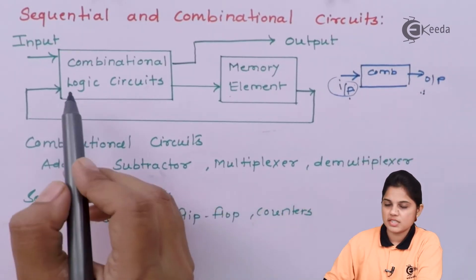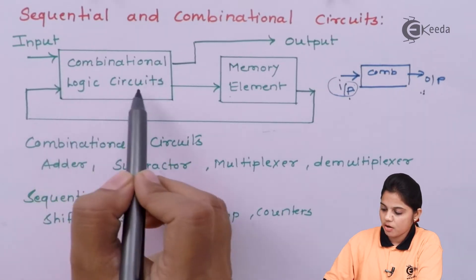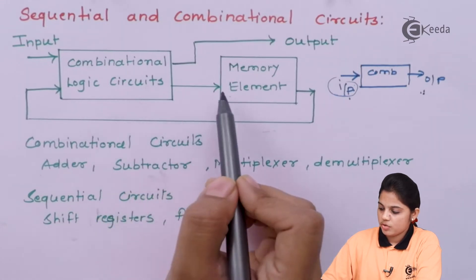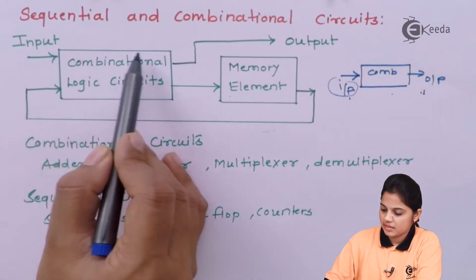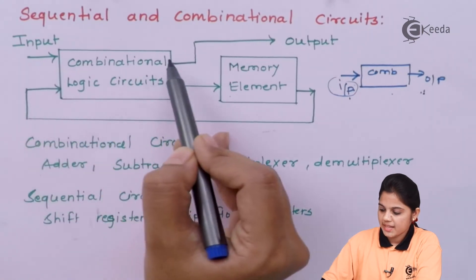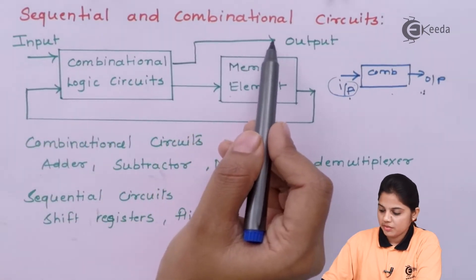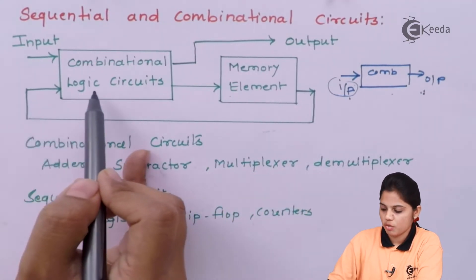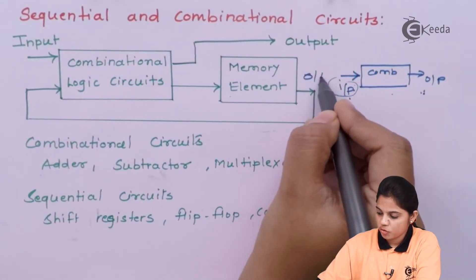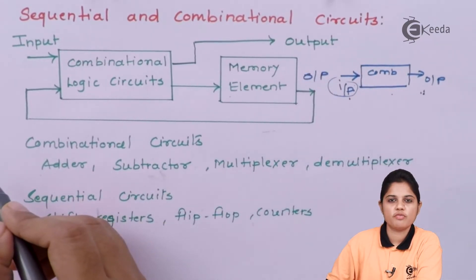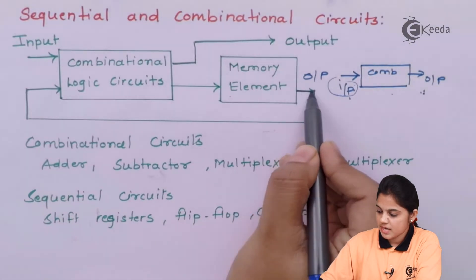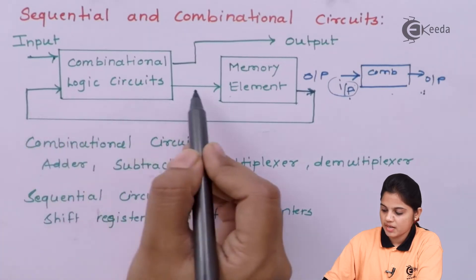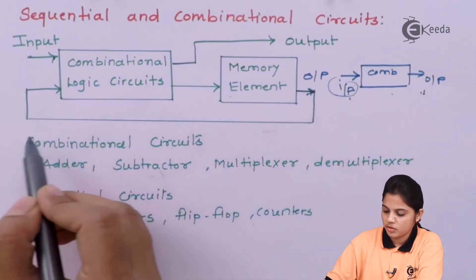In a sequential circuit, the combinational circuit's output is stored in a memory element. The input is given and the combinational circuit produces an output, but that output is stored and used as a feedback input to the combinational circuit. This output is then called the output of a sequential circuit, because it depends on the present input as well as the past output, which is fed back using the memory element.